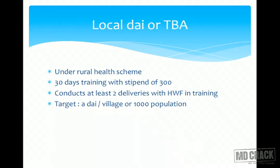After training, an honorarium of 50 rupees per month and drugs worth 600 rupees per annum are given to the Village Health Guide. The target is one Village Health Guide per 1000 rural population. The second peripheral worker is the Local Dai or traditional birth attendant, placed under the Rural Health Scheme. She receives 30 days training with a stipend of 300 rupees.